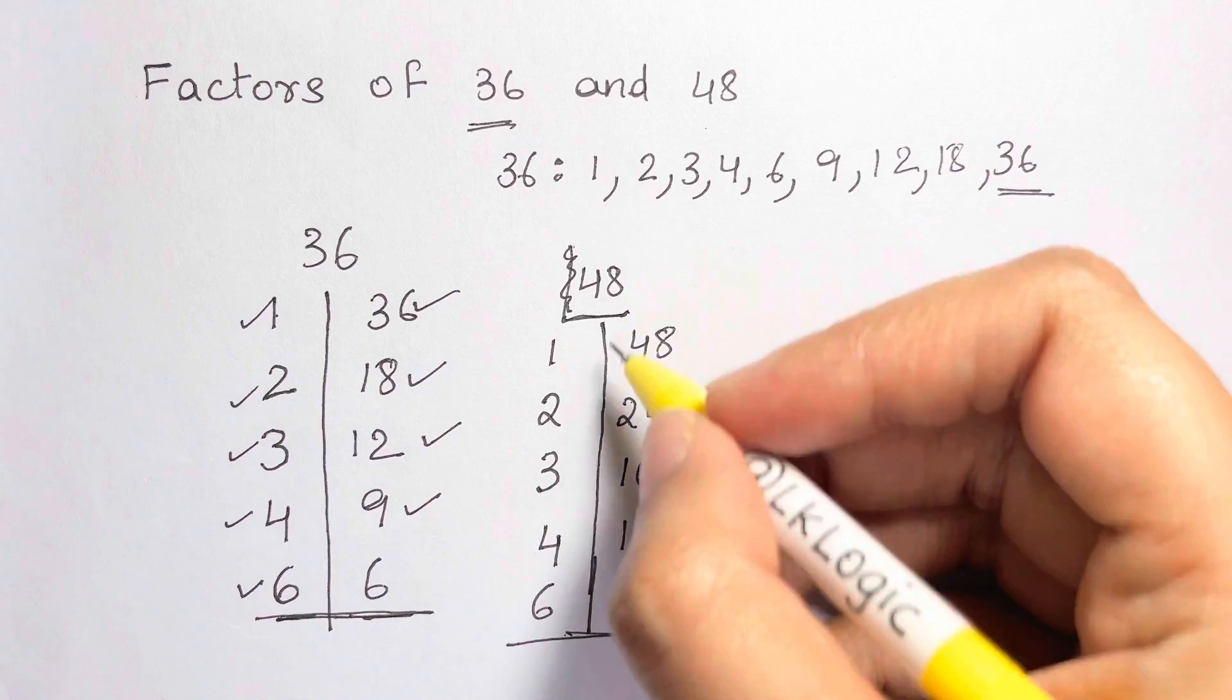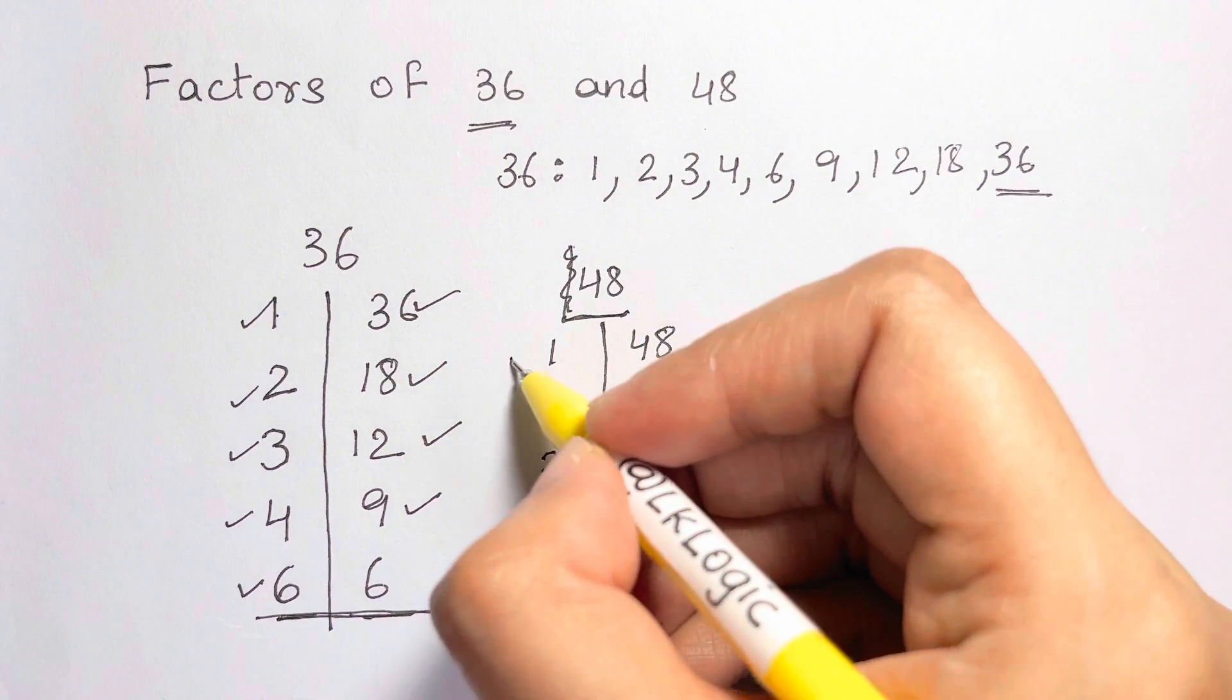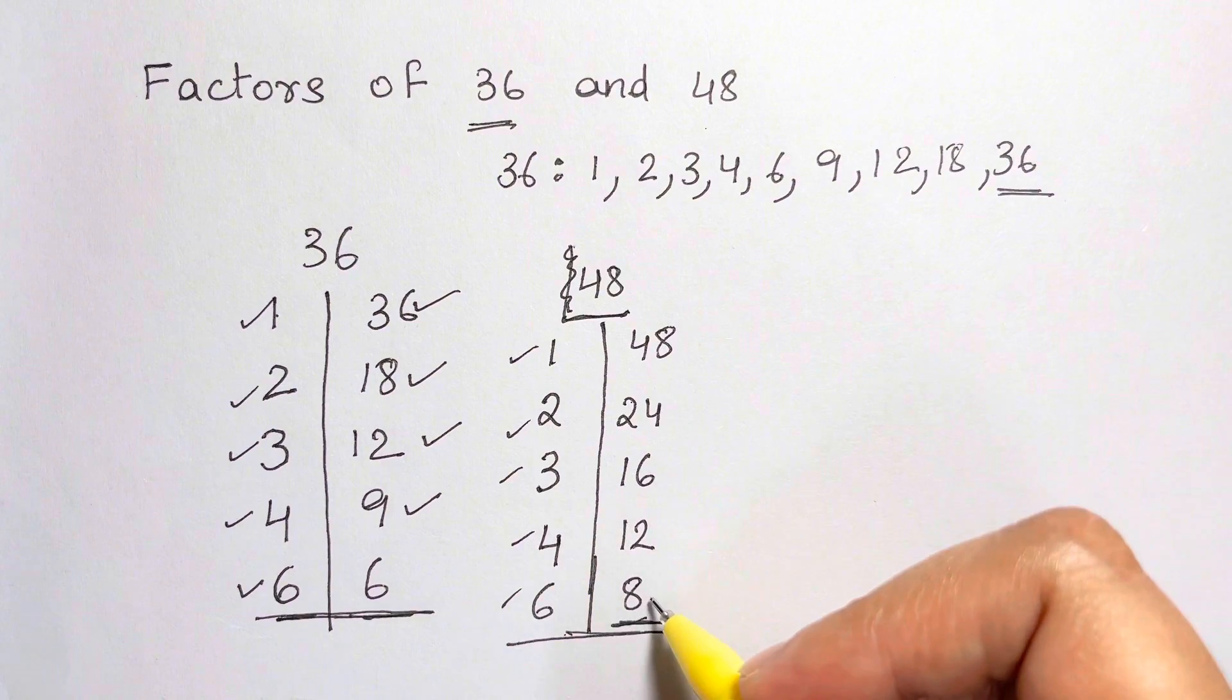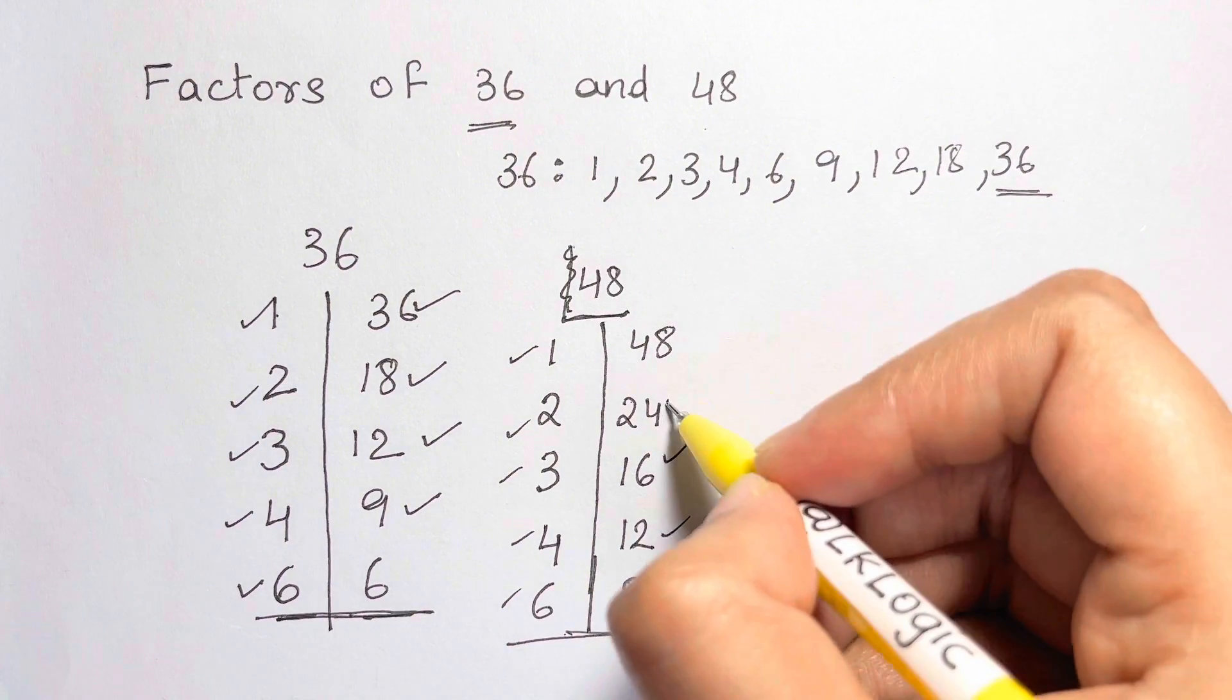So, we have got all the factors. So, 1, 2, 3, 4, 6. And move on here. 8, 12, 16, 24, 48.